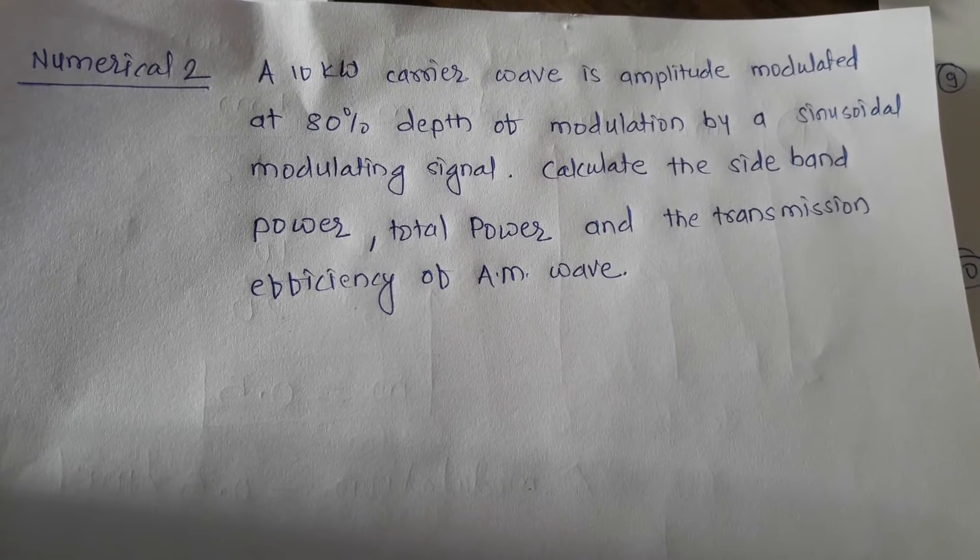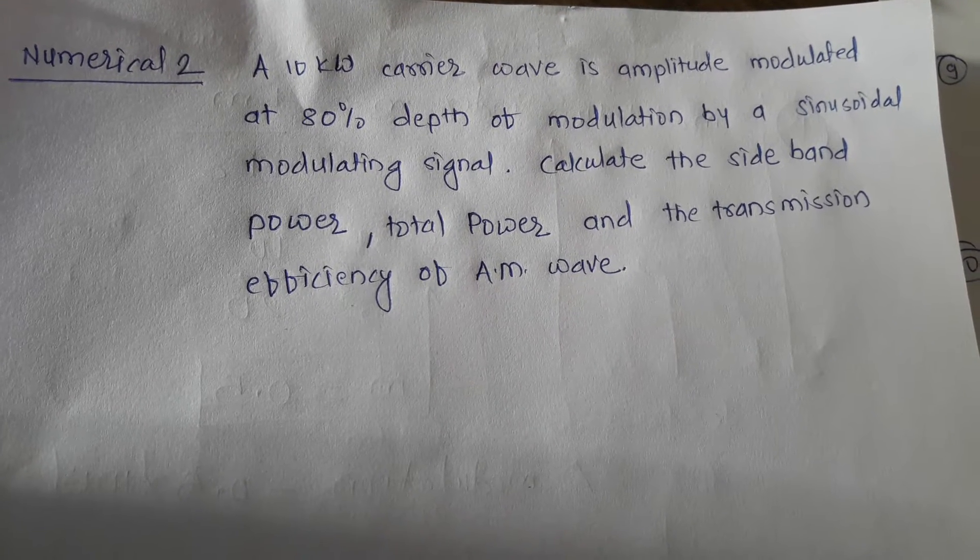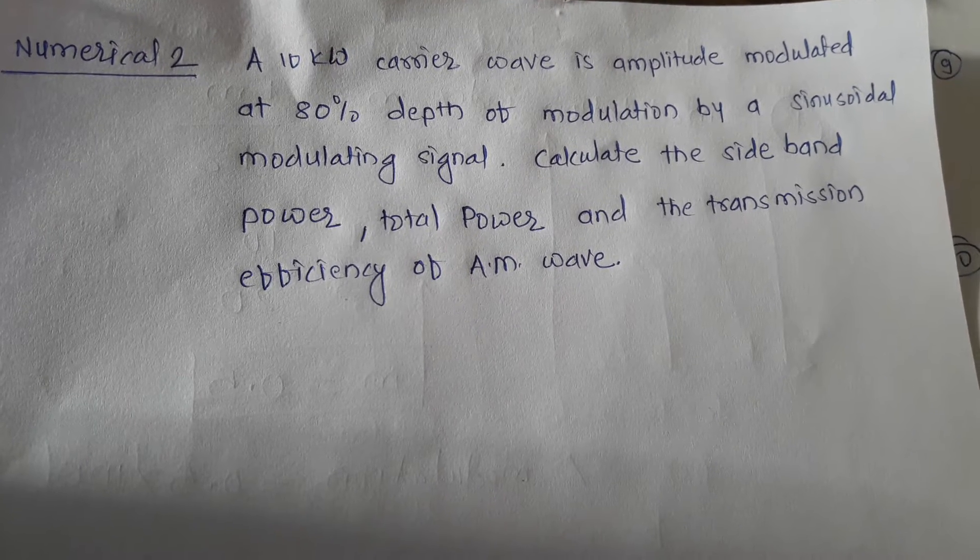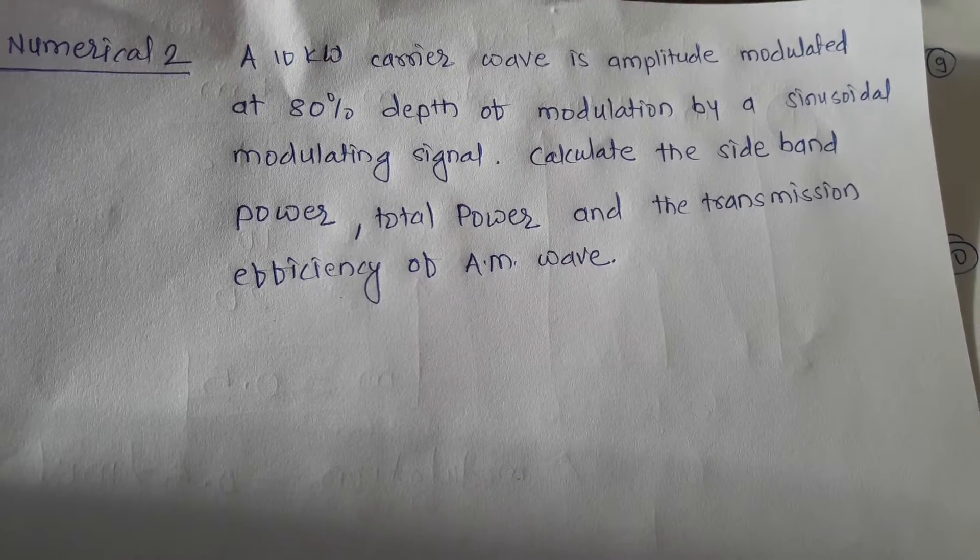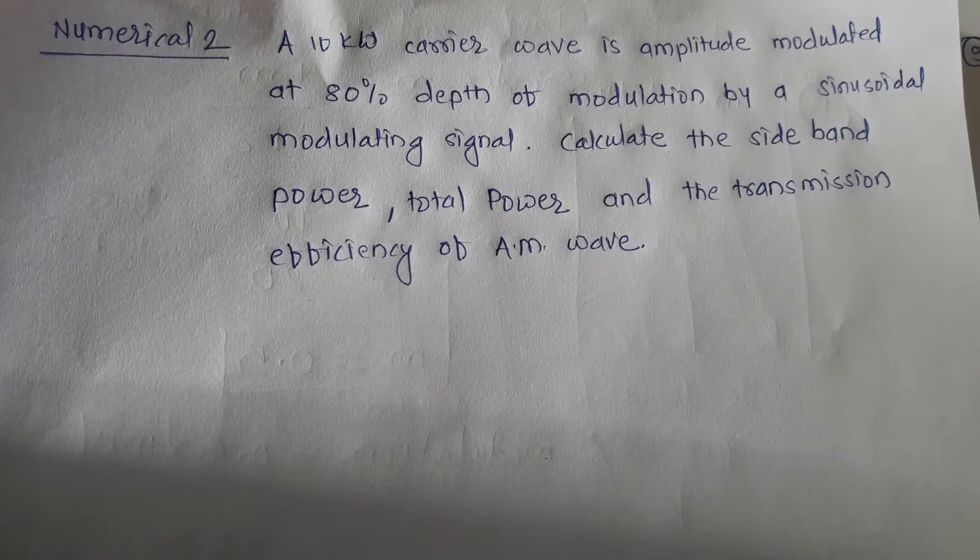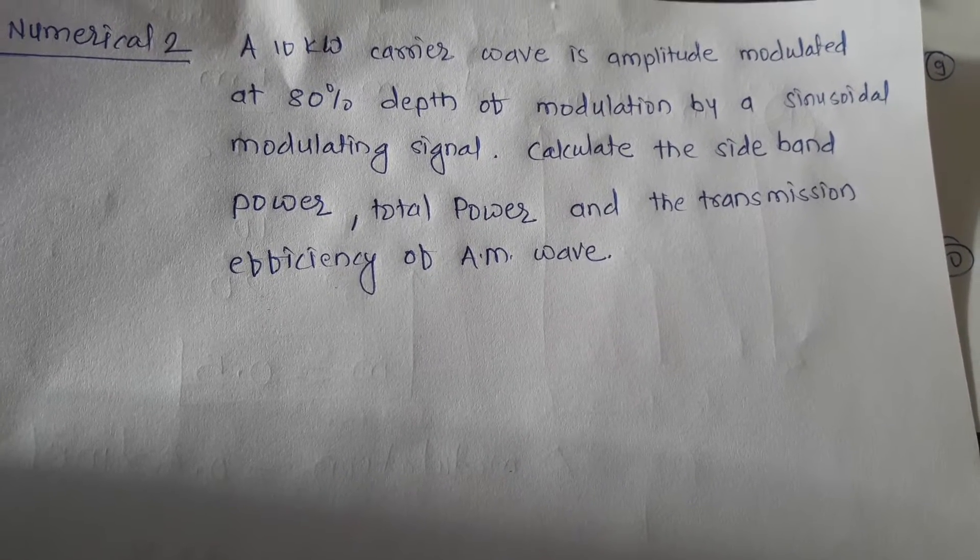In numerical 2, a 10 kW carrier wave is amplitude modulated at 80% depth of modulation by a sinusoidal modulating signal. Calculate the sideband power, total power, and the transmission efficiency of AM.